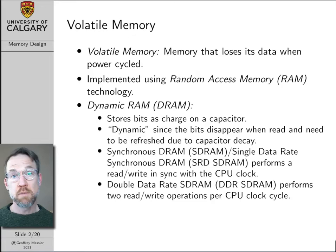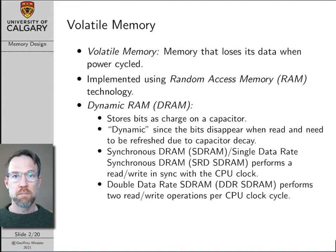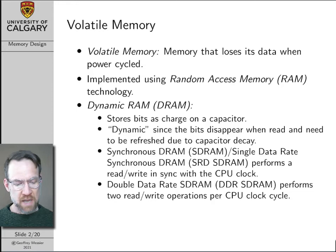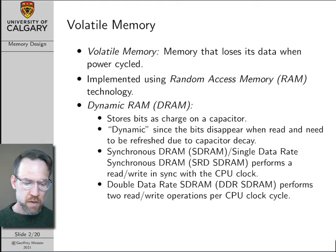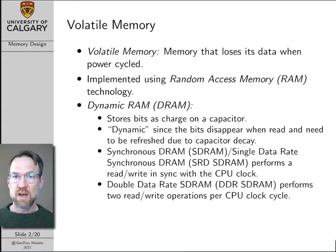Volatile memory is memory that loses its data when it's power cycled — when you turn the power off. Random access memory, or RAM, is the primary type of volatile memory. There are two large families of RAM: dynamic RAM and static RAM. Dynamic RAM, or DRAM, is the kind you typically buy for your computer. DRAM stores bits as charge on a capacitor, which allows for very high density.